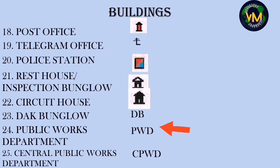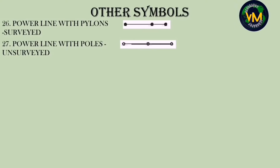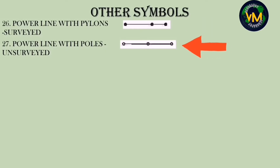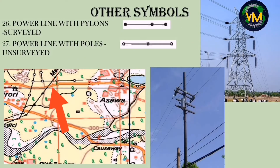Numbers twenty-four and twenty-five are Public Works Department (PWD) and Central Public Works Department (CPWD), visible in the settlement Abu map. Numbers twenty-six and twenty-seven are power line with pylons and power line with poles. Shaded circles connected by lines indicate pylons; unshaded circles indicate poles. Whenever you see these symbols, it means those settlements have power supply.